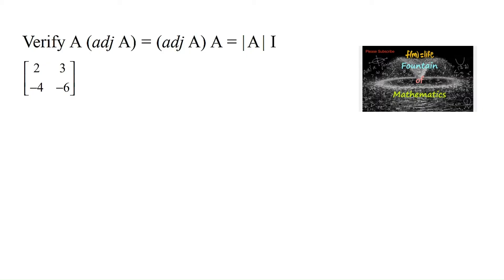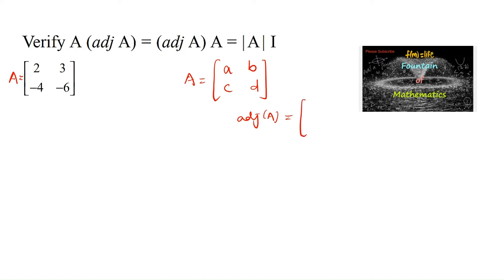Given the matrix A is equal to [[2, 3], [-4, -6]]. We know that if a 2×2 matrix is [[A, B], [C, D]], then the adjoint of that matrix is found by interchanging A and D, and changing the sign of B and C. So we write [[D, -B], [-C, A]]. This is the adjoint formula.